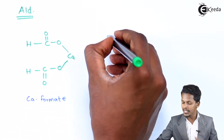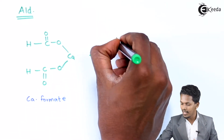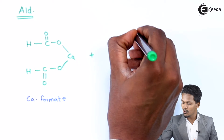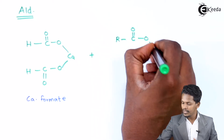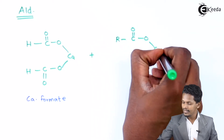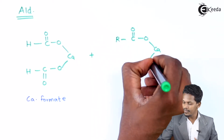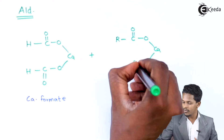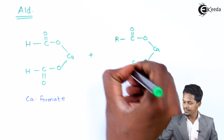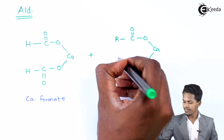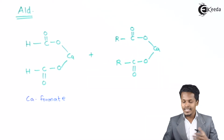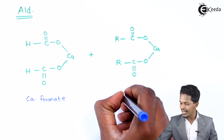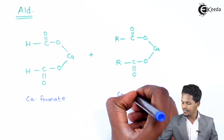That is how we can represent it as R–C(=O)–O, with calcium. This is what we have represented as calcium carboxylate, which can also be called the calcium salt of fatty acid, except for the calcium salt of formic acid.